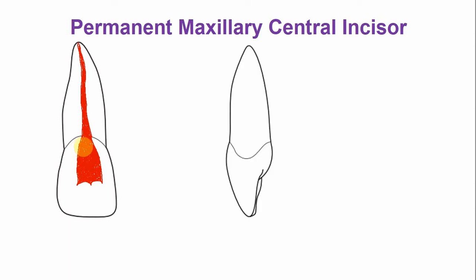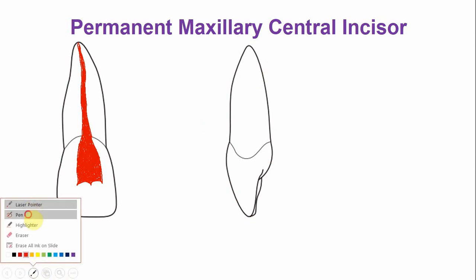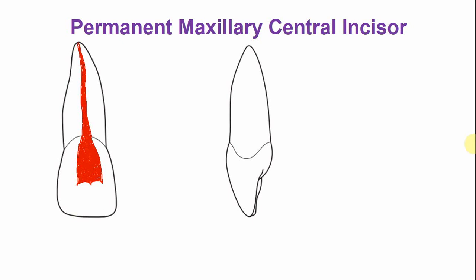This is the labial-lingual section — in other words, this is a section of the tooth showing the outline from the mesial aspect. Let's discuss how the root canal and the pulp chamber appear from the mesial aspect.